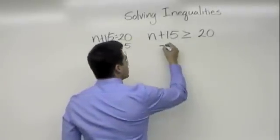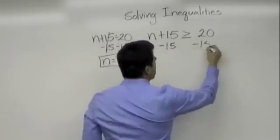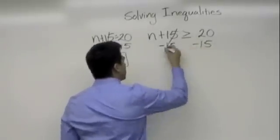Let's see. We're subtracting 15 to both sides. Okay, great. Cancels out.